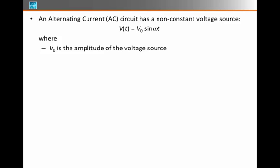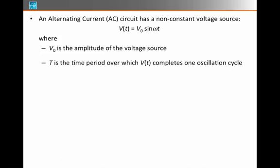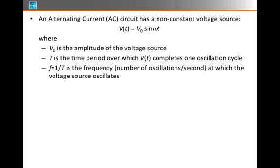Capital T will be the period over which this voltage makes one complete oscillation cycle. We've seen this in mechanical oscillations, now we're going to see it here in voltage oscillations. Then we introduce the term frequency, which is just one over the period, and it has units of inverse seconds. It's a measure of how many oscillations per second the voltage source is creating.